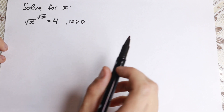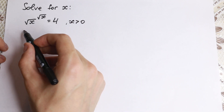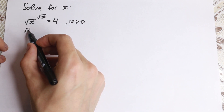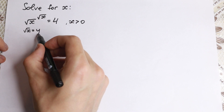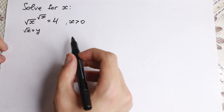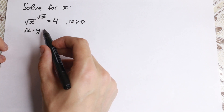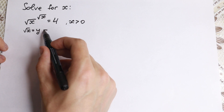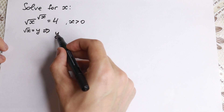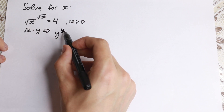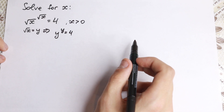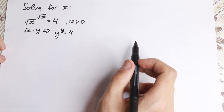Let's use substitution. Let square root of x equal to y. We can do this since square root of x is greater than 0. As a result, we will have the equation y to the power y equals 4.